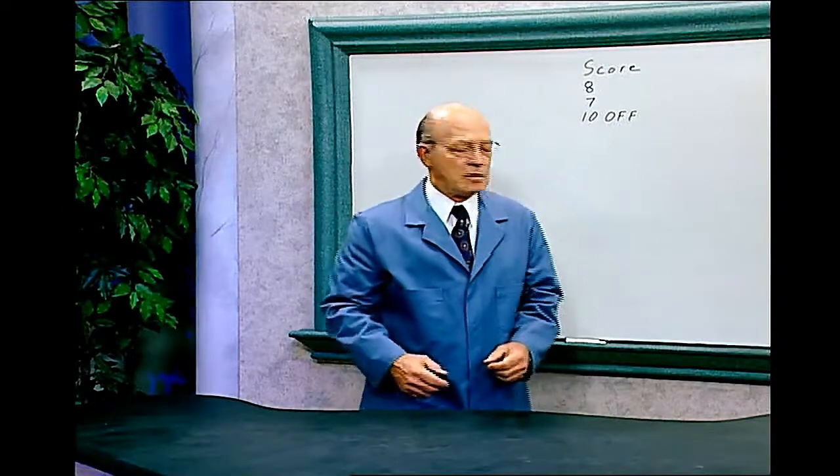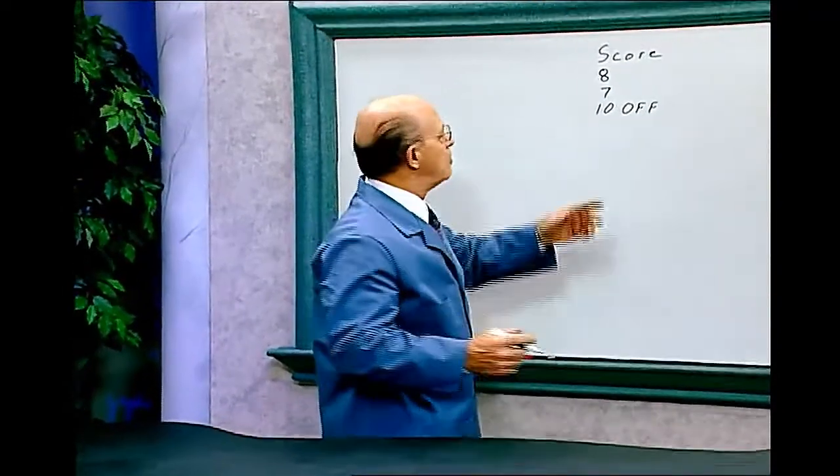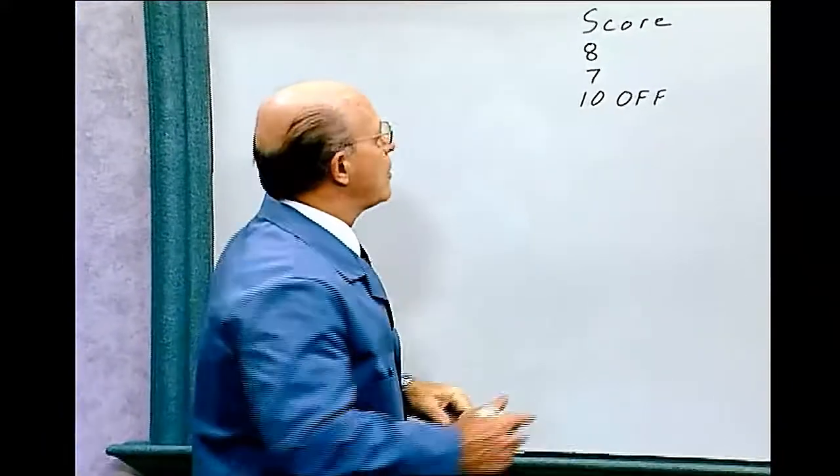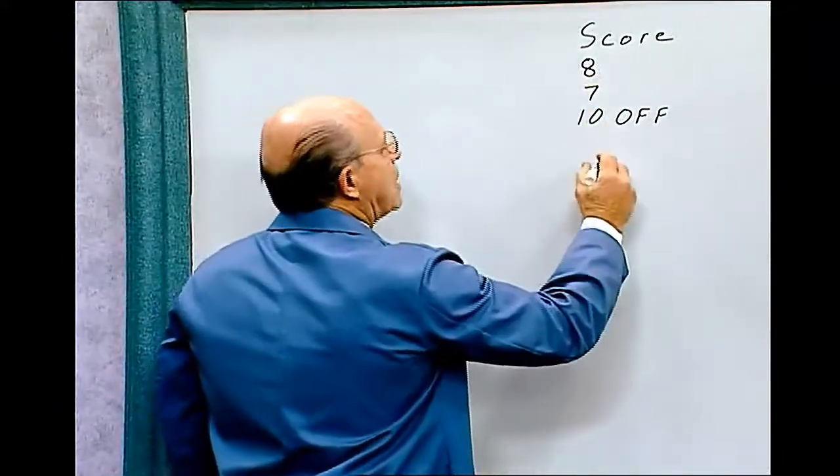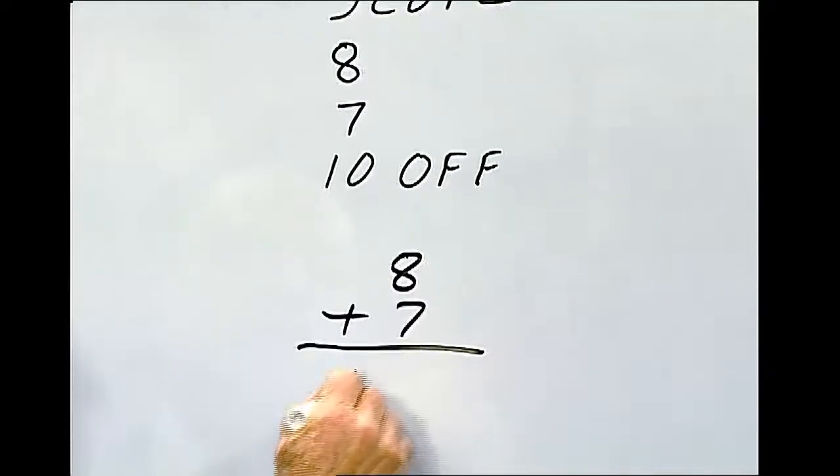Let's do the math. I scored three points, an eight, and a seven, and ten off. First we'll add the eight and the seven. Eight plus seven equals fifteen.